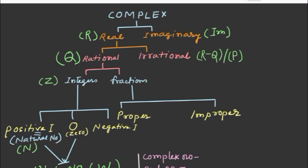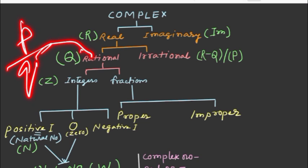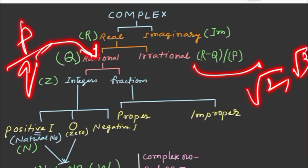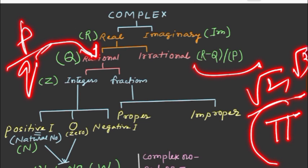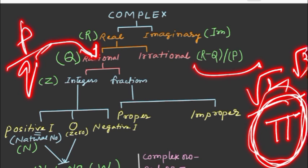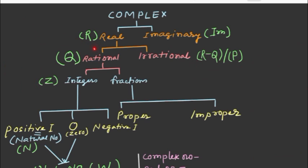Examples of rational numbers include fractions like 1 by 2, 1 by 5 — proper and improper fractions. And pi is also an example of an irrational number. Rational numbers consist of integers and fractions.